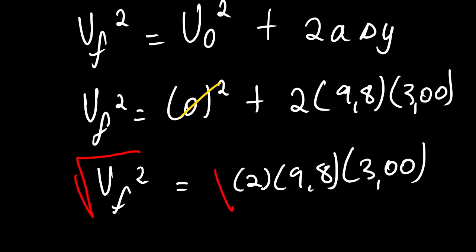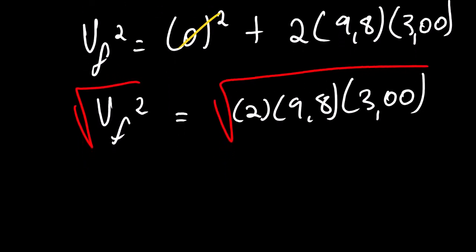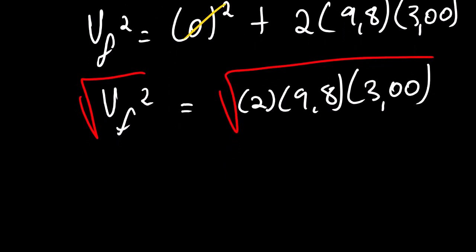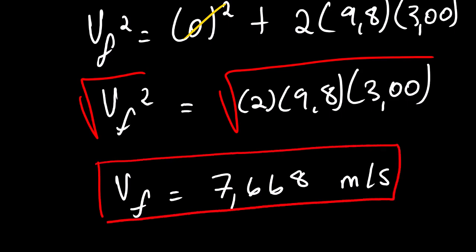We square root both sides. Then we have Vf equals square root of 2 multiplied by 9.8 multiplied by 3.00. The answer is 7.668 meters per second. The person will enter the water with this velocity.